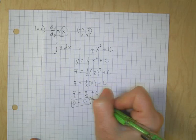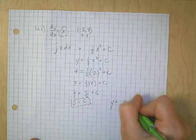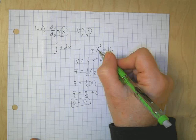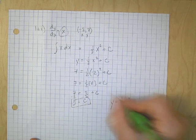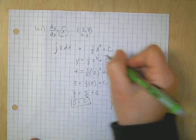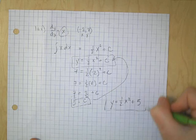The answer is y equals x squared, 1 half x squared, plus 5. Okay, because I need to go back to this, and I need to substitute back in my c. That is the final answer.